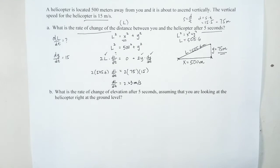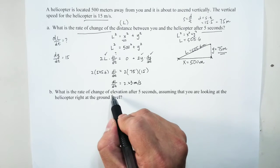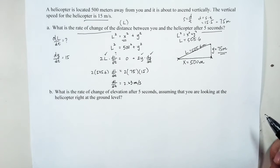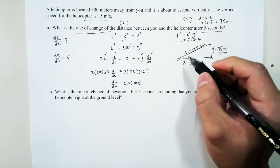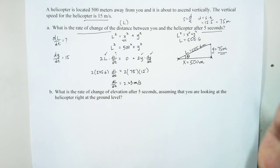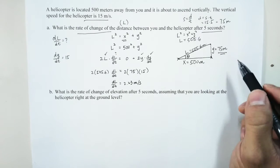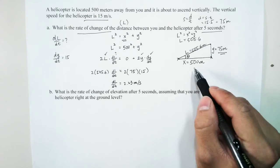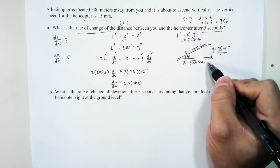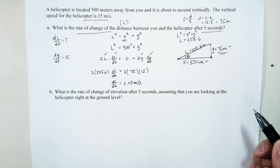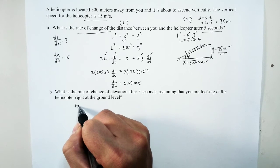Now let's focus on Part B: what is the rate of change of the angle of elevation after five seconds? Assuming you are looking at the helicopter from ground level, we label this angle theta. We have the height and the horizontal distance, so we can use tangent.